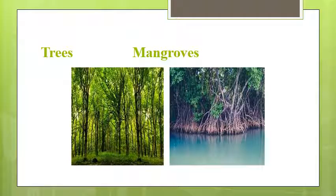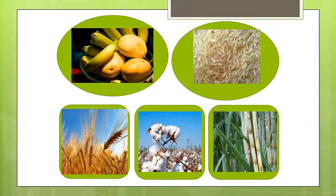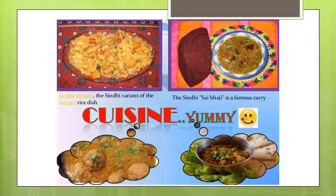Trees like keeker, mulberry, and shisham grow in Sindh. There are also some coastal forests called mangroves, which are rich in marine life. Sindh has the largest mango and banana farms in Pakistan. Crops like wheat, rice, cotton, and sugarcane also grow here. Biryani, palla fish, and bhaji are the traditional dishes of Sindh.